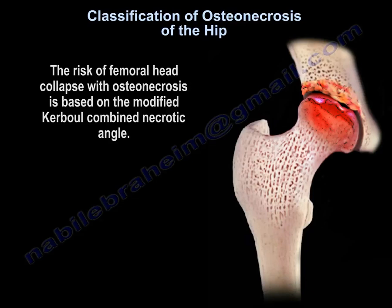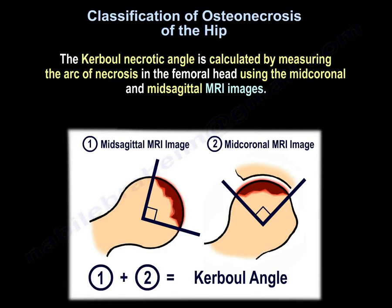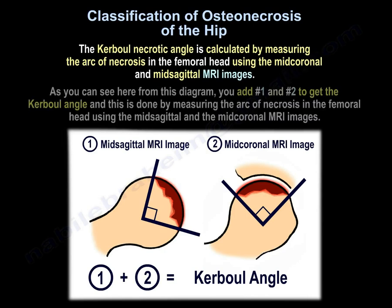The risk of femoral head collapse with osteonecrosis is based on the modified carbone combined necrotic angle. The carbone necrotic angle is calculated by measuring the arc of necrosis in the femoral head using the mid-coronal and mid-sagittal MRI images.